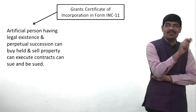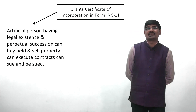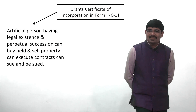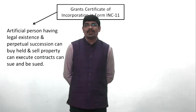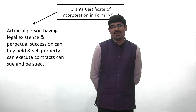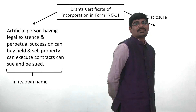The effect of the Certificate of Incorporation: from the date written in it as the date of incorporation, the company becomes an artificial person having separate legal existence and perpetual succession. The company can buy, hold, and sell things in its own name, can execute contracts in its own name, and can sue and be sued — all in its own name.